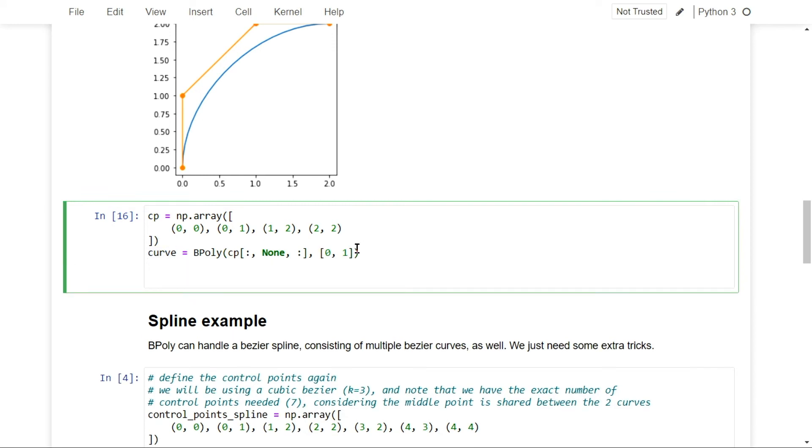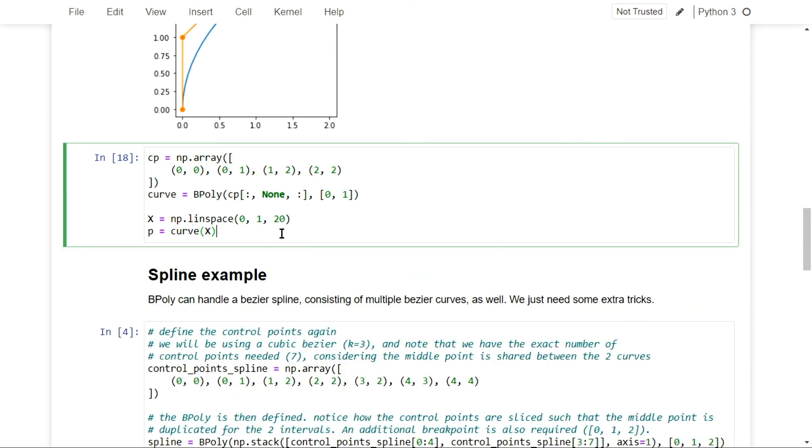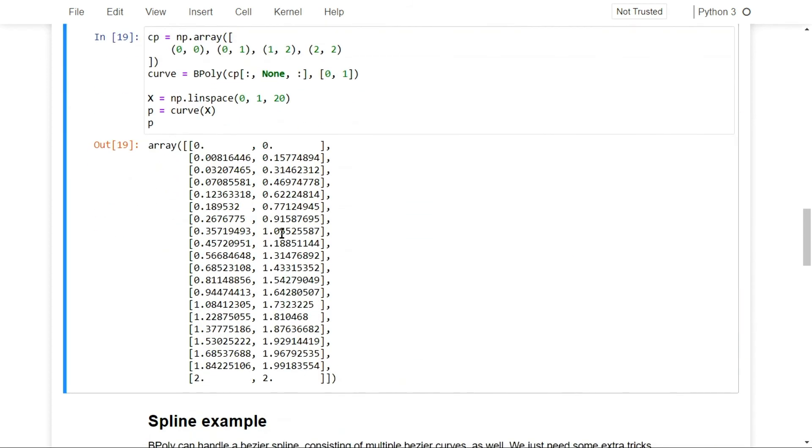But then when you want to draw it out, you need to generate a bunch of numbers in between zero and one. So I do that using linspace. So this will generate out the 20 numbers in between zero and one, all the decimals. And then the points can be created by just calling the Bpoly object as a function and pass in the number. And you would just get a list of two-dimensional points, just like that. So it's a really nice syntax if you ask me.